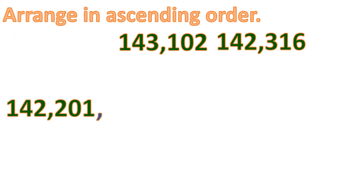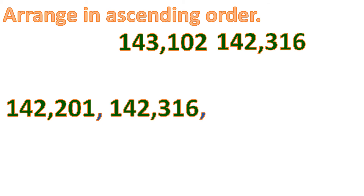Then we will compare the remaining two numbers. Observing the 1,000th place, they differ, so the one with the smaller digit is the smaller number, which is 142,316. Then the remaining number will be the biggest. So this is the arrangement from smallest to biggest.